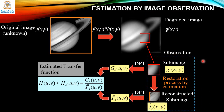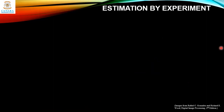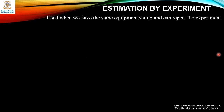This observation-based approach is used when we only know g(x,y) and cannot repeat the experiment. The second type is estimation by experiment. If equipment similar to that used to acquire the degraded image is available, it is possible to obtain an accurate estimate of the degradation. Images degraded as closely as possible to the image we wish to restore can be acquired, and then the impulse response of the degradation can be obtained by imaging an impulse — basically a small dot of light — using the same system settings.